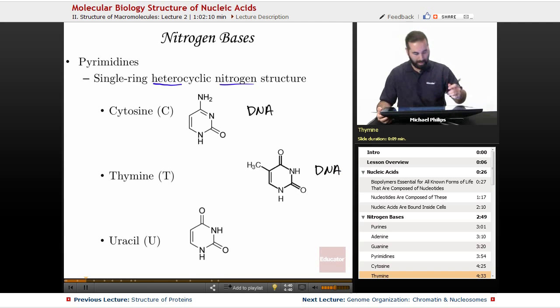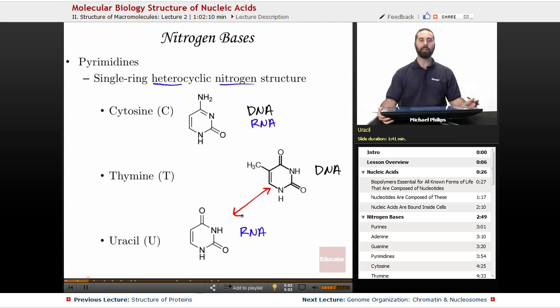Now we have uracil. Uracil is not normally found in DNA. Uracil is found in RNA. And also found in RNA is cytosine. So, what we actually have here is a switch of thymine for uracil when we're going between DNA and RNA.